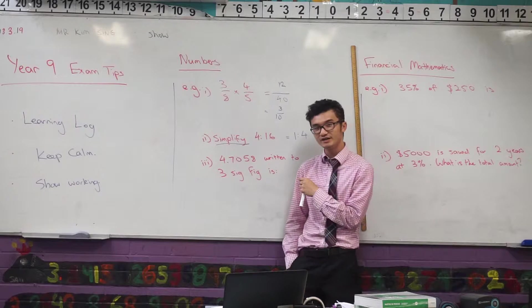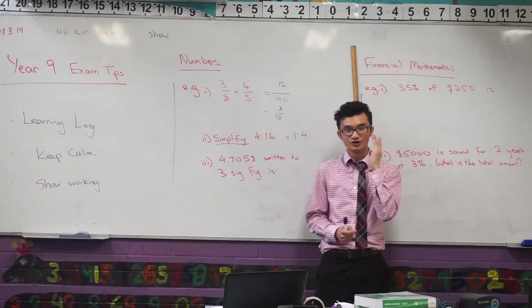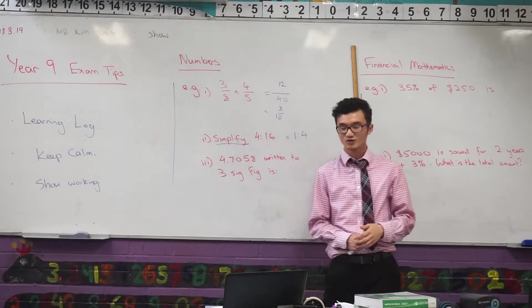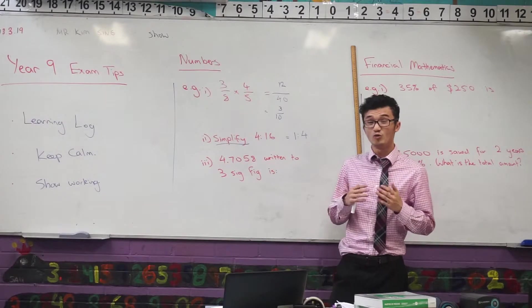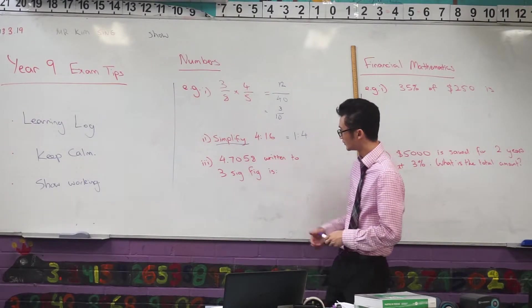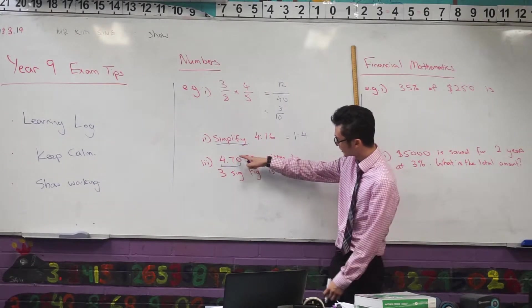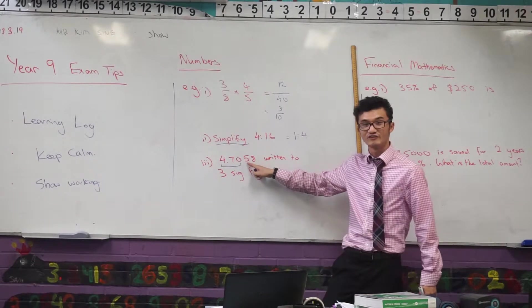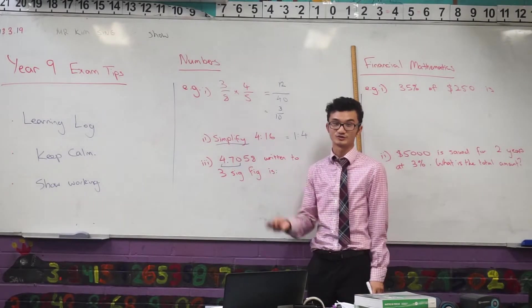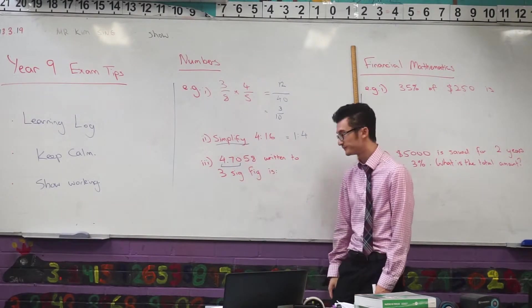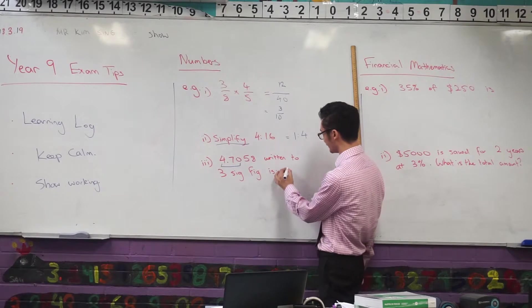What does it mean written to 3 significant figures though? That means that my answer should only have 3 significant figures. I still have to remember my normal rounding rules though. So I know I'm looking at these three here. Well when I'm rounding I have to look at the digit afterwards. Now this is 5 or more, we say we let it soar, so we increase this one by one. So this written to 3 significant figures you're just going to be 4.71 just like that.